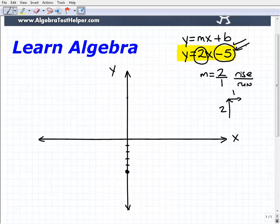From this point here at negative 5, I'm going to go up 2 (1, 2) and to the right 1. And that is my second point that's on the line.